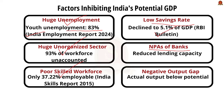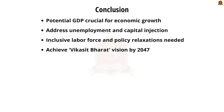Let us conclude. Since potential GDP measures the actual level of output in the economy, it is very important to address it on a priority basis. To improve potential GDP, more capital can be injected into the economy by making policy relaxations and addressing shortcomings in the labor force, like making it more inclusive. If we can address this, India can achieve the Viksit Bharat vision of 2047 using its potential GDP. Let's now move on to the next topic.